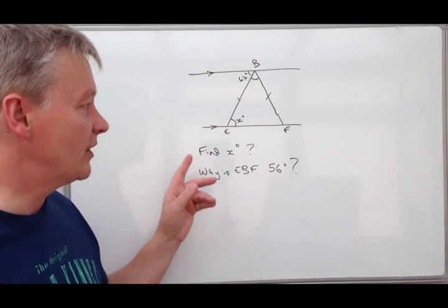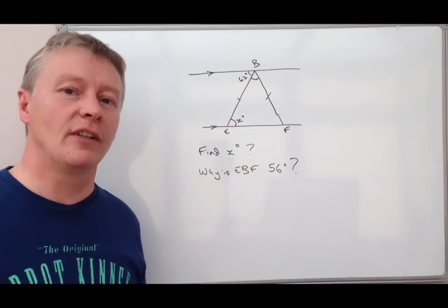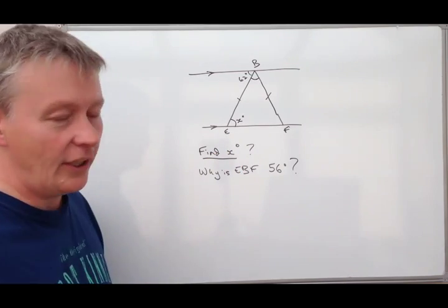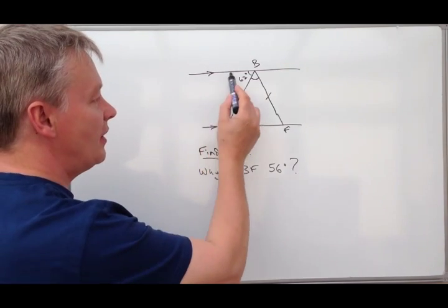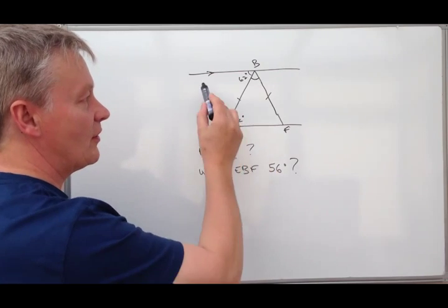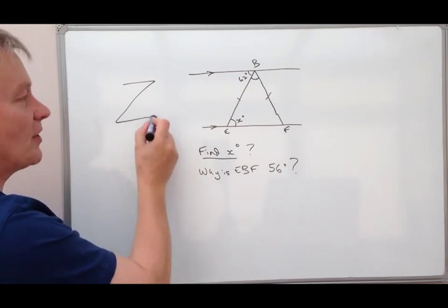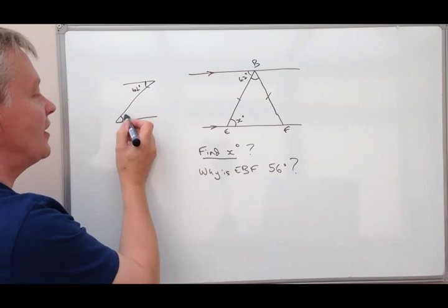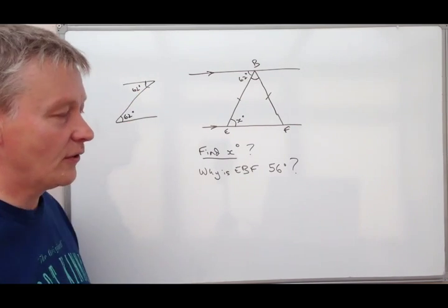This particular one deals with something called alternate angles because it's asking us to find the value of X. Well, if we have a look at that, you can see maybe that's like a little sort of Z shape. So we've got something like that where this is 62 degrees and actually this is also 62 degrees.